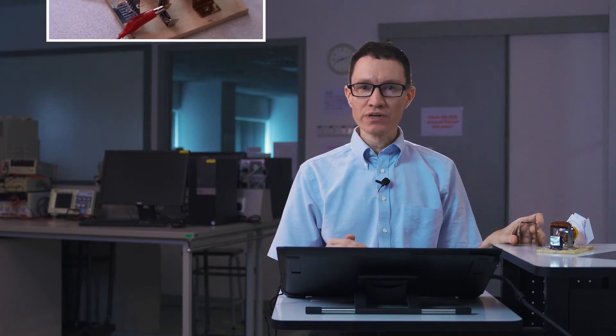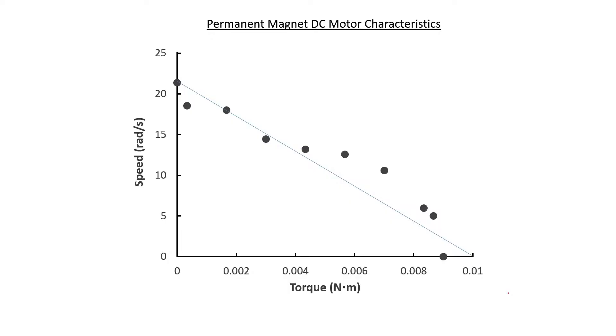Before we characterize this DC motor, let's take a look at some of the results from the previous motor to review some important concepts. These are the results we measured in our third video in the motor series. We obtained an approximately linear relationship between speed and torque, and that's exactly what we expect with a permanent magnet motor.